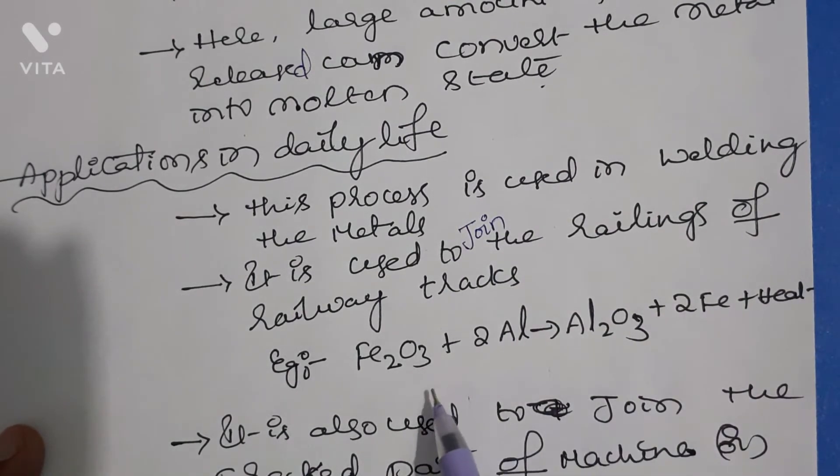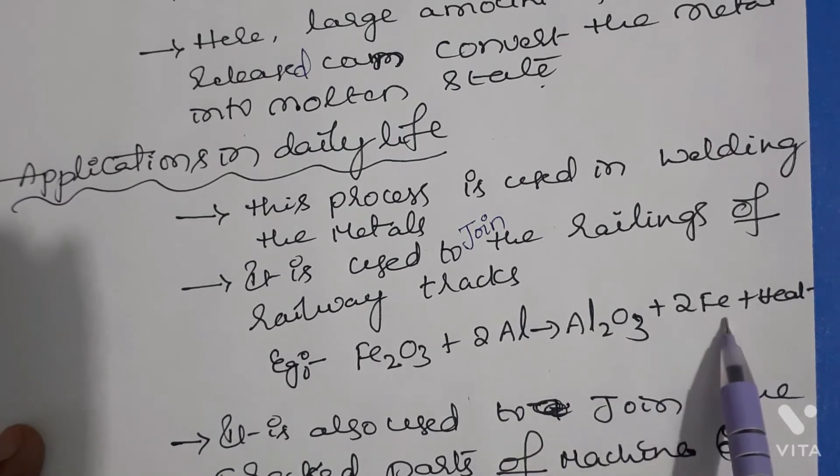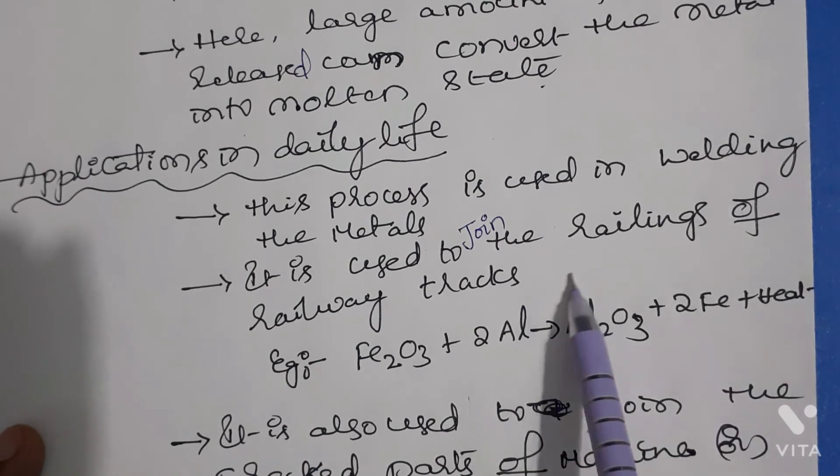Here the reaction between metal oxide and aluminum: Fe2O3 plus 2Al gives Al2O3 plus 2Fe and heat. This molten metal, this molten iron, can be used for joining the railings of railway tracks.